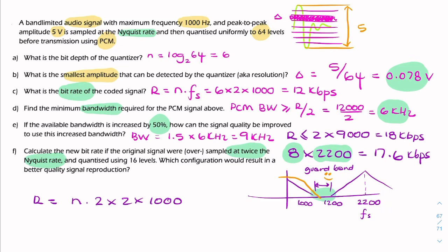And we're told that we're using 16 levels. So 16 levels means n, the number of bits, is log 2 of 16, which is simply 4. So now, what we have is a bit rate of 4 times 2 times 2 times 1,000. So 16 kilobits per second.